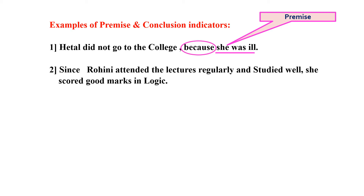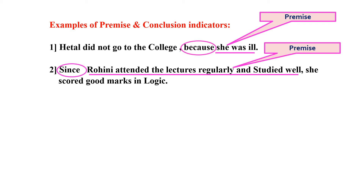Now let us take another example. Since Rohini attended the lectures regularly and studied well, she scored good marks in logic. Here the premise indicator is 'since.' What will be the premise? Rohini attended the lectures regularly and studied well. What will be the conclusion? She scored good marks in logic — the statement established on the evidence of her attending lectures regularly and studying well.